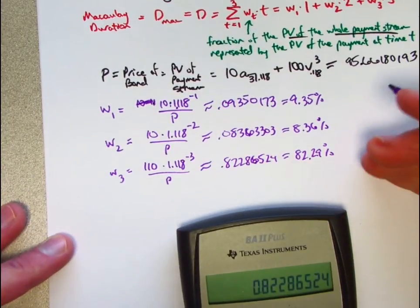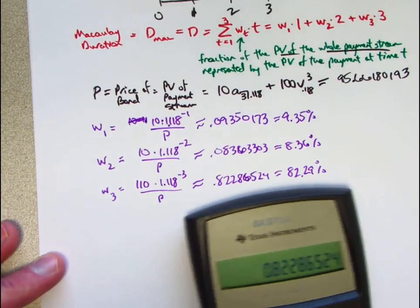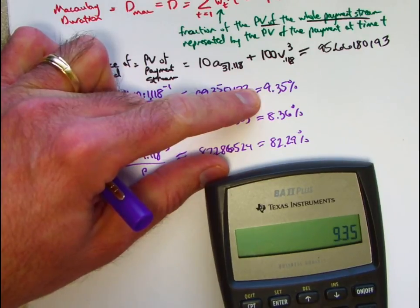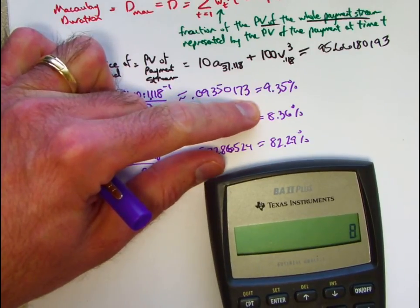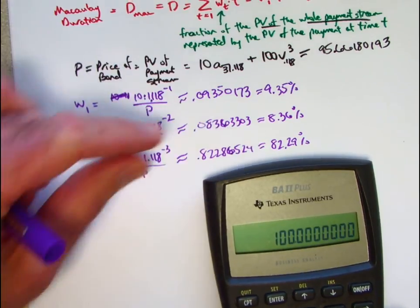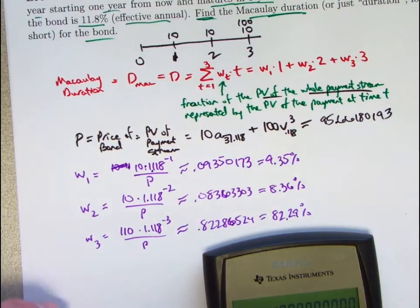If we add up these percentages, we should effectively get 100%. I think even with rounding here, I think it does come out that way. Let me go ahead and add the percentages as percentages. 9.35 plus 8.36 plus 82.29 does come out to 100. Okay? So again, we could have figured out W3 by adding these two and then subtracting that from 1.